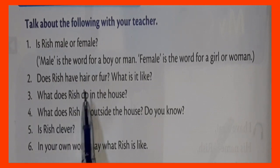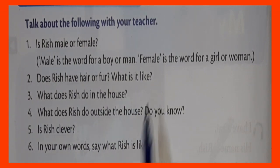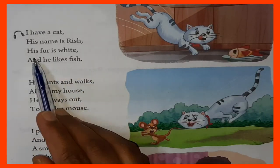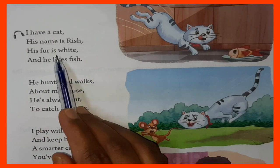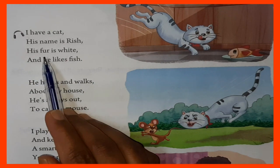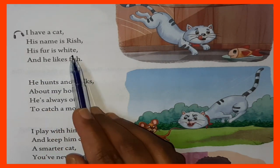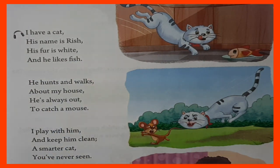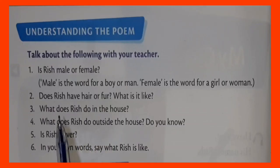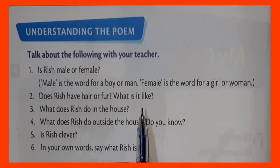Does Rish have hair or fur? What is it like? See here — His fur is white. So Rish has fur, not hair, and the fur is white in color. So we have to write: Rish has fur, and it is white in color.